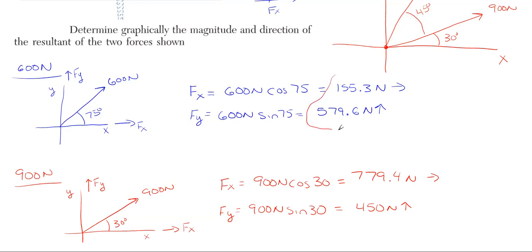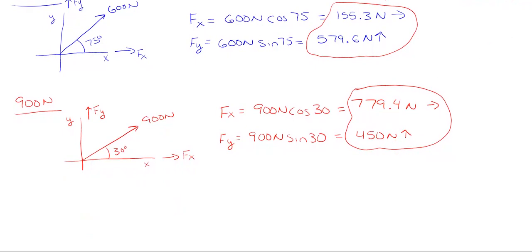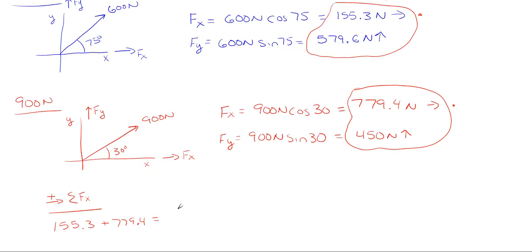Now I've transformed both forces into their components and we're going to add them together in the x and y directions. Summing forces in the x direction, taking everything to the right as positive and to the left as negative — we only have two fx forces and they're both going to the right: 155.3 newtons plus 779.4 newtons, giving a total of 934.7 newtons acting to the right.